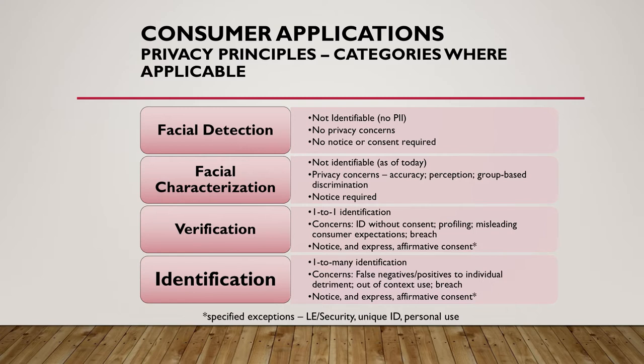The first is facial detection — like when you hold your camera up and see a little yellow box around the people in a photo, or a counter in a public space that counts the number of people who go by. This is trained and designed to do nothing more than see 'face or not face.' There are no privacy concerns and no individual data collected in this scenario.